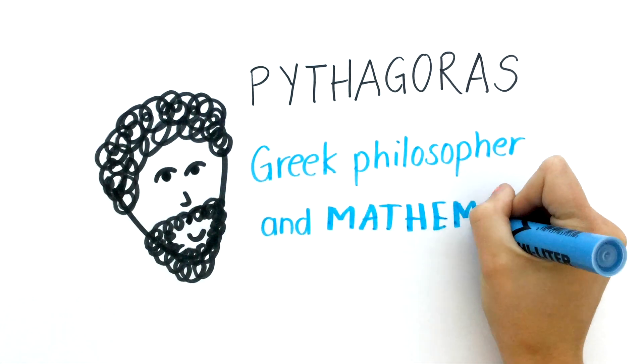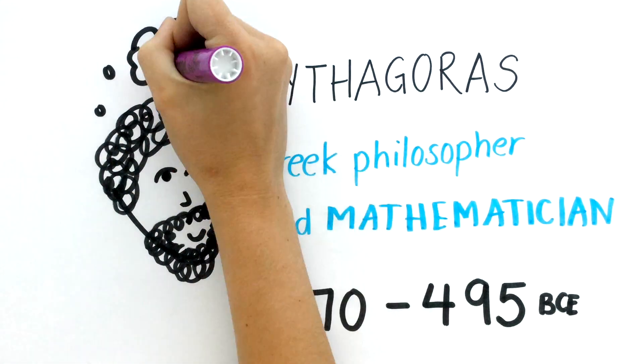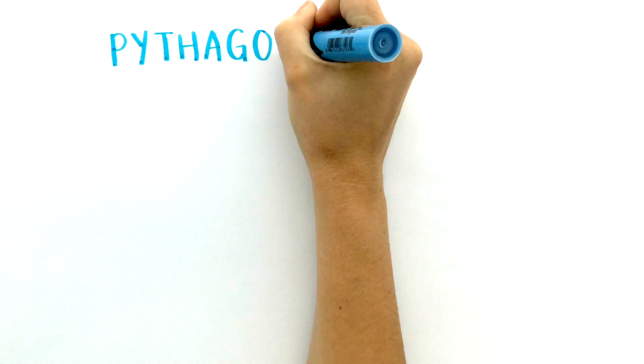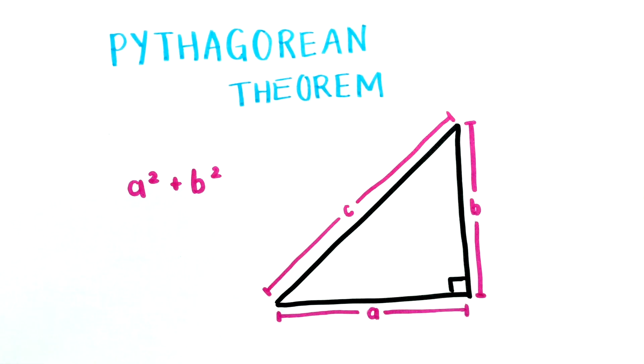Pythagoras was a Greek philosopher and mathematician. He lived around 570 to 495 BC and was known as one of the first pure mathematicians. His most famous discovery is the Pythagorean theorem, which tells us how the side lengths of a right-angle triangle are related.